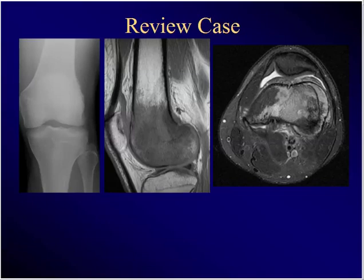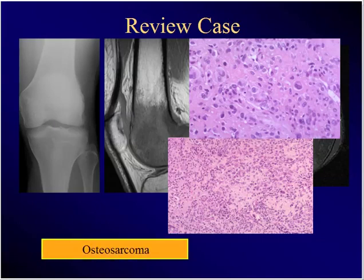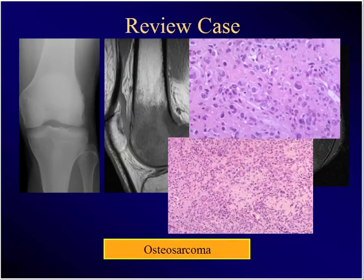Young person, knee pain, night pain — these images on MR and plain film with that histology. Something's going on here, doesn't look right. Clearly diffuse involvement, bright on T2. There's a soft tissue mass. Is this good or bad? It's bad. What's the diagnosis? That's a sarcoma.